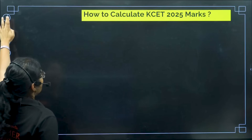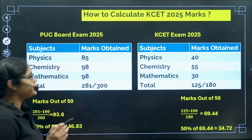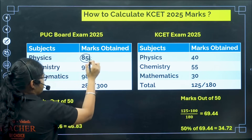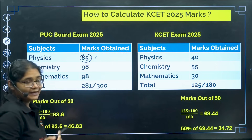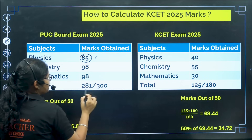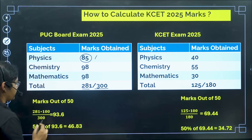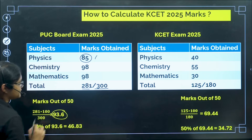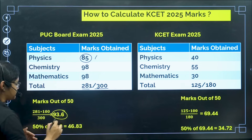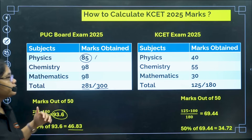Let's take an example. In your PU board exams 2025, suppose in Physics you have got 85 out of 100, Chemistry 98 out of 100, and Mathematics 98 out of 100. The total comes out to be 281 out of 300. That is 93.6 percentage. Now if you take 50 percent of this — just divide by 2 — you will get 46.83.